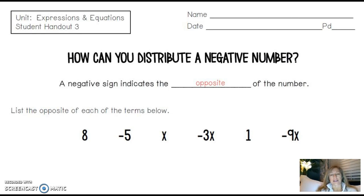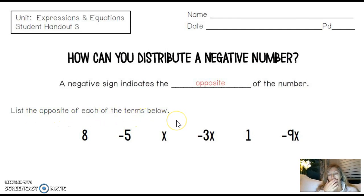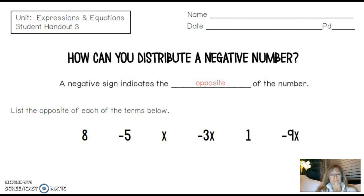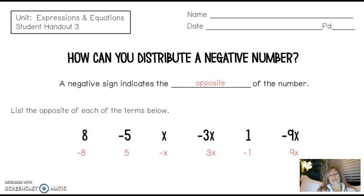Let's practice — remember way back to the beginning of the year when you used to tell me what the opposites were. It says list the opposite of each of the terms below. Pause the video and practice writing the opposites. Here's what you should have written: negative 8, positive 5, negative x, 3x, negative 1, and 9x.